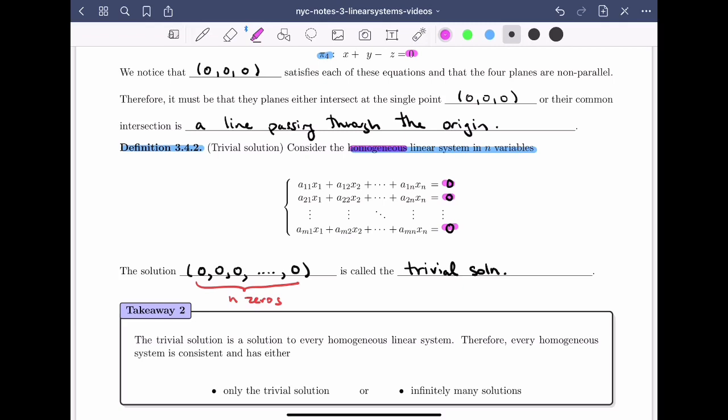So let's look now at takeaway number two, which is that the trivial solution is a solution to every homogeneous linear system. Therefore, every homogeneous linear system is consistent, which means it has at least one solution. And so it could either have only the trivial solution, exactly the zero solution, or it must have infinitely many solutions. If we want to say more, say about the geometry or how many parameters we would need to describe the solution set, we'll have to think a bit harder. But in general, every homogeneous linear system has either only the trivial solution or infinitely many solutions.